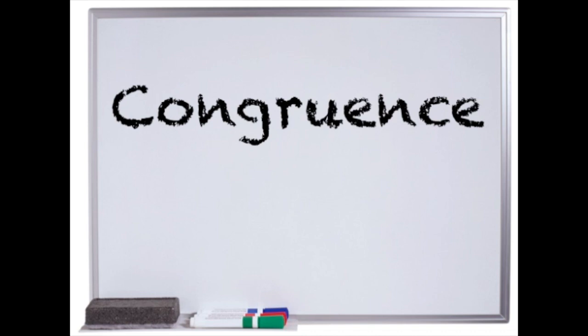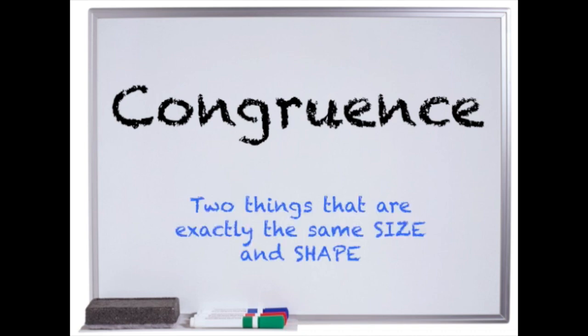Congruence. Congruence is a word that means that two things are exactly the same shape and size. In this video, we will talk more specifically about congruence relating to triangles.